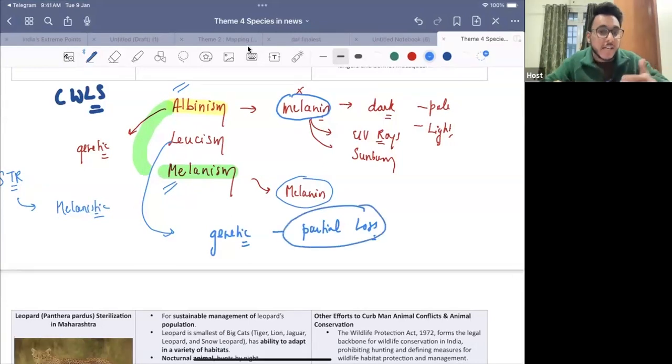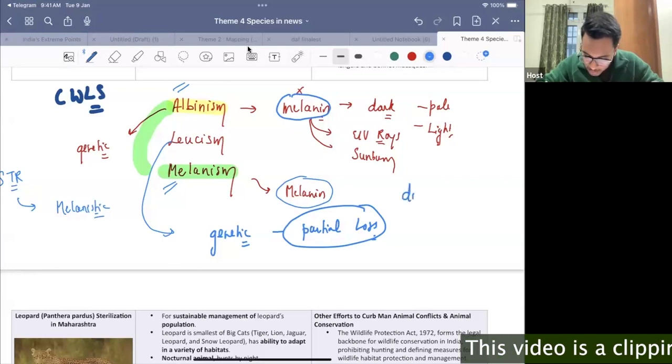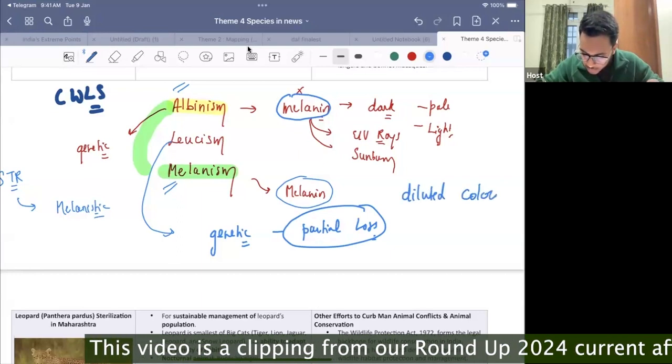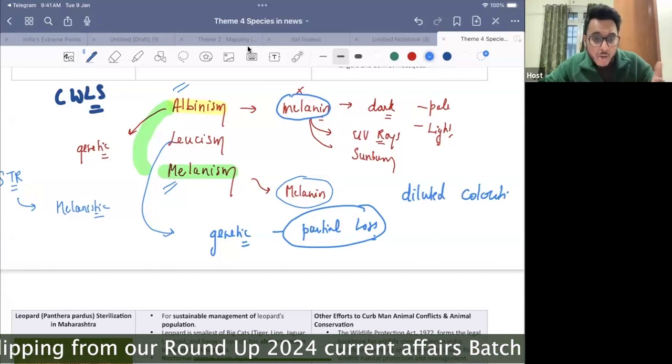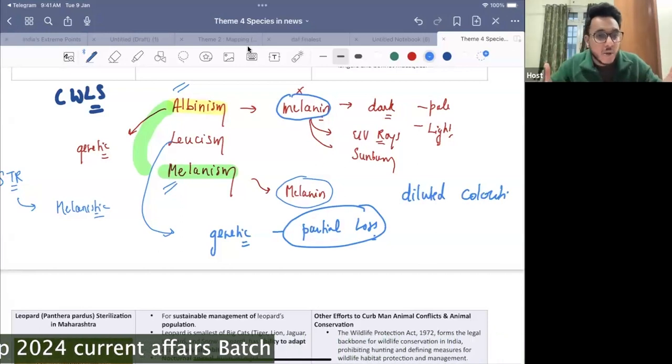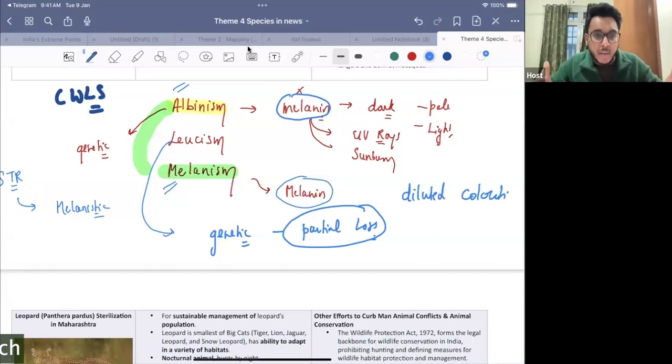Now, in leucism, what happens? There will be the partial loss of certain pigments. And because of this, what will happen? They will have diluted coloration. And they also might have certain patchy designs on their body. They can have the patchy designs on their body.